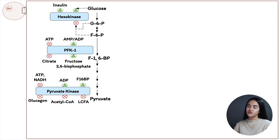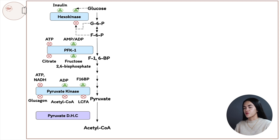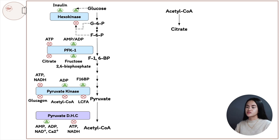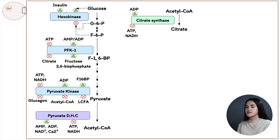The pyruvate we've produced is then transported into the mitochondria and converted to acetyl-CoA by the pyruvate dehydrogenase complex. The pyruvate dehydrogenase complex is stimulated by AMP, ADP, NAD+, and calcium in skeletal muscle, and it's inhibited by ATP and NADH. The acetyl-CoA can then enter the citric acid cycle by condensing with oxaloacetate to yield citrate, catalyzed by citrate synthase. Citrate synthase is activated by ADP and inhibited by ATP, NADH, succinyl-CoA, and its product citrate.